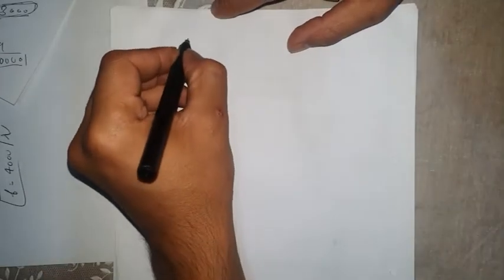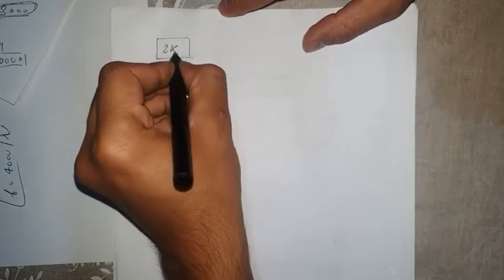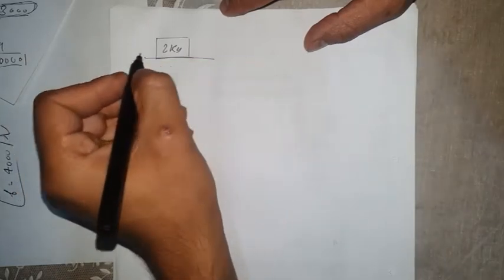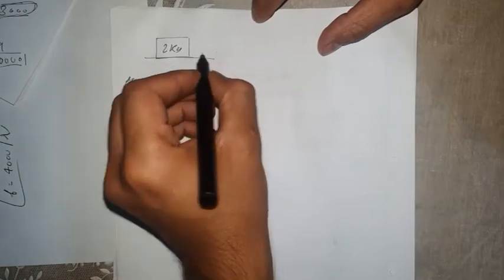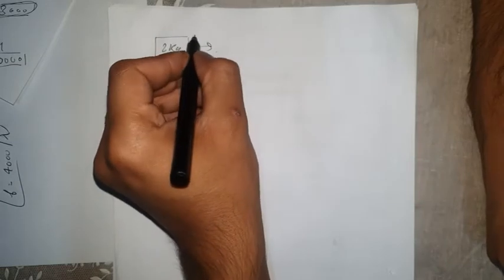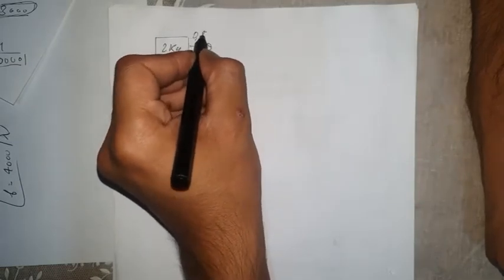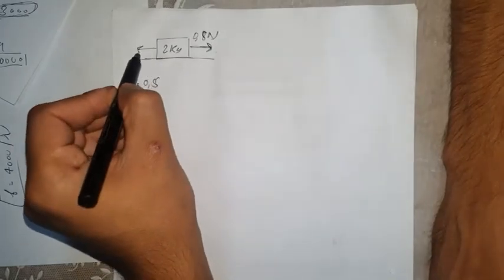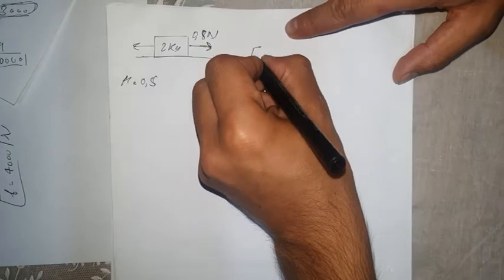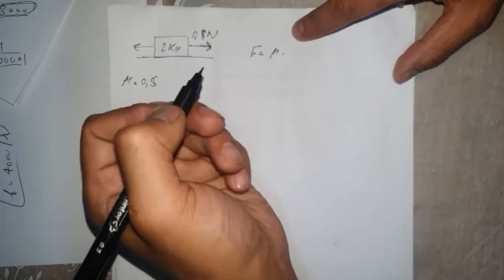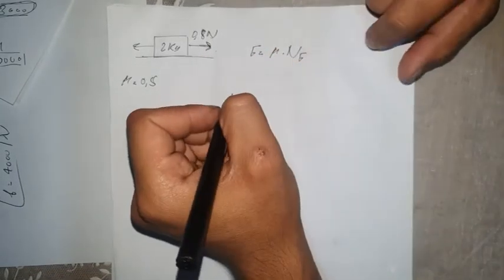In this video we are going to go through some examples for friction force. Suppose we have a block of wood with a mass of 2 kg. The coefficient of friction for this block of wood is 0.5, and a force acting on this block of wood is 0.8 N. We know that the frictional force acts in the opposite direction of the applied force. The formula for frictional force is: friction force equals mu — the coefficient of friction — times normal force.